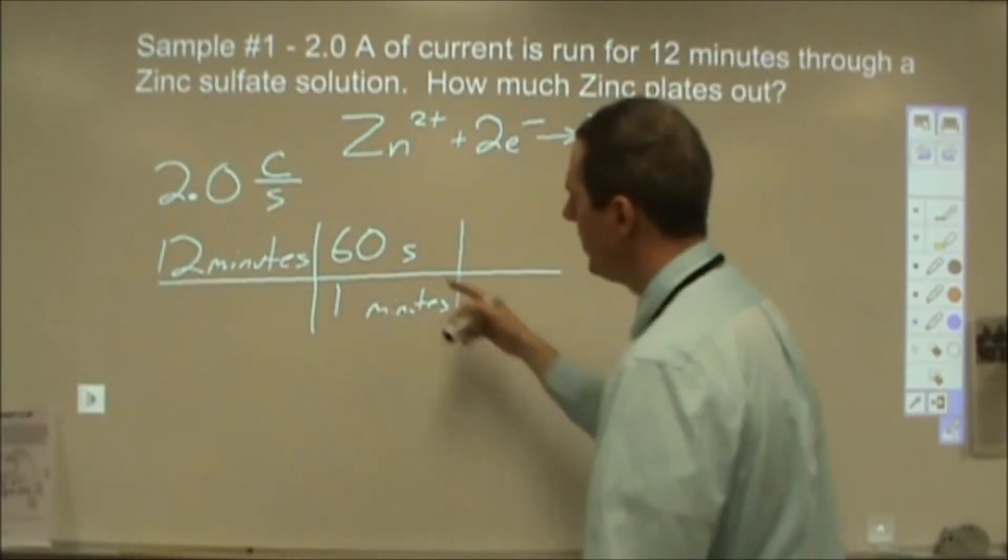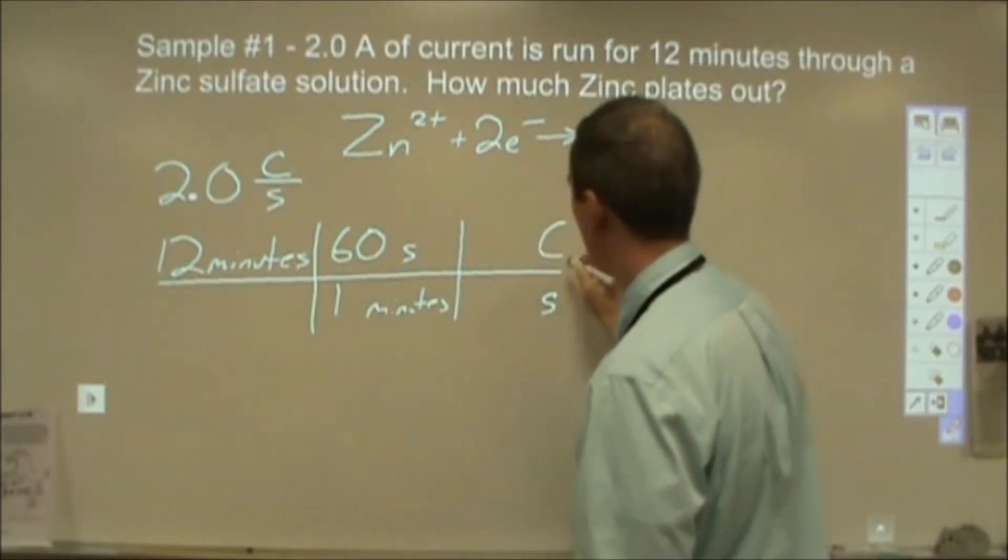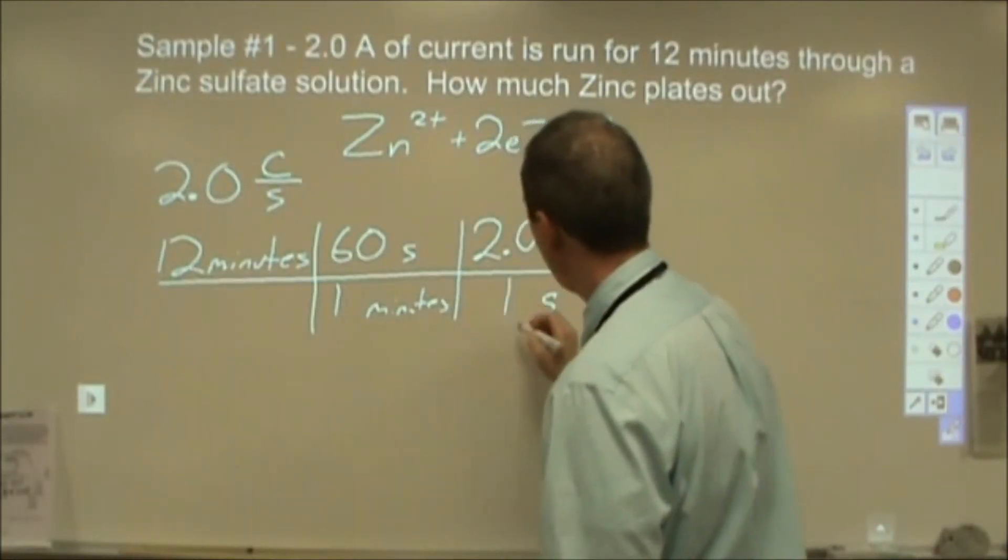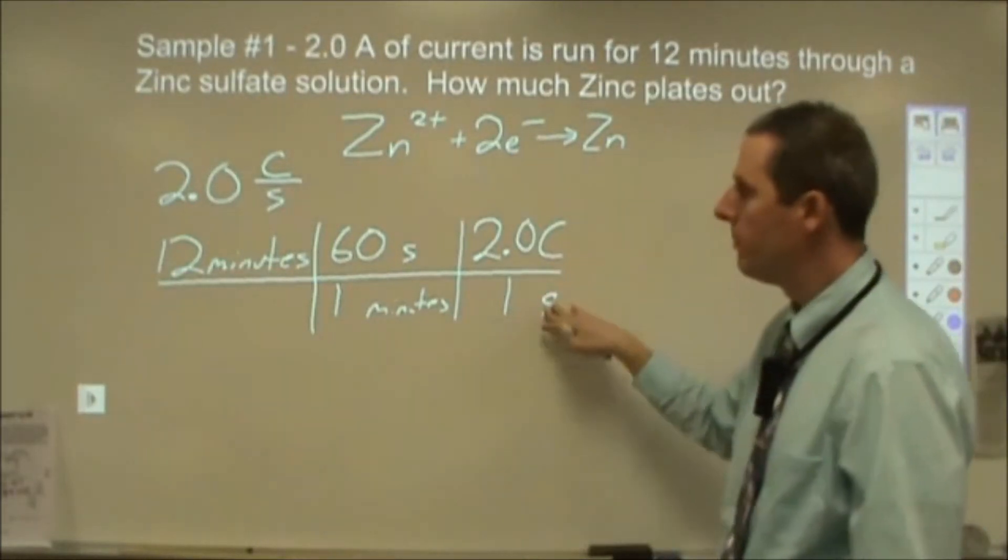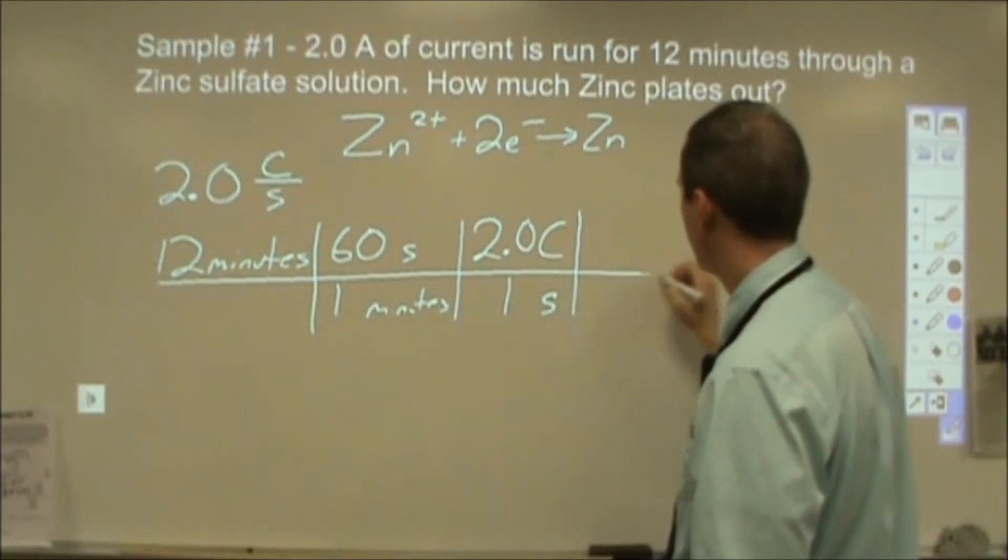Then what I'm going to do is I'm going to use the amperage as a conversion factor. So I'm going to say seconds to coulombs and 2 coulombs are passing by for every 1 second that goes by. So I'm using my amperage in the midst of my stoichiometry problem to eventually get into how many moles of electrons I have.